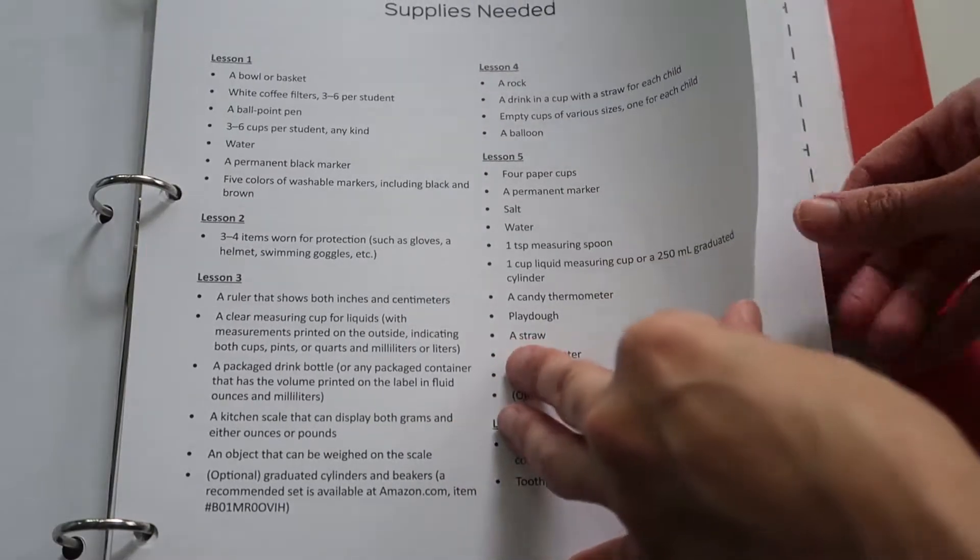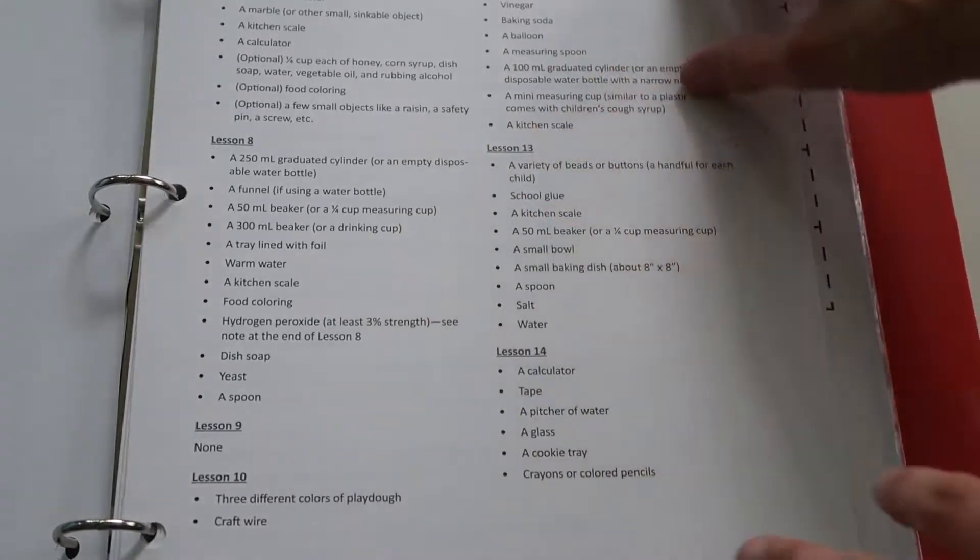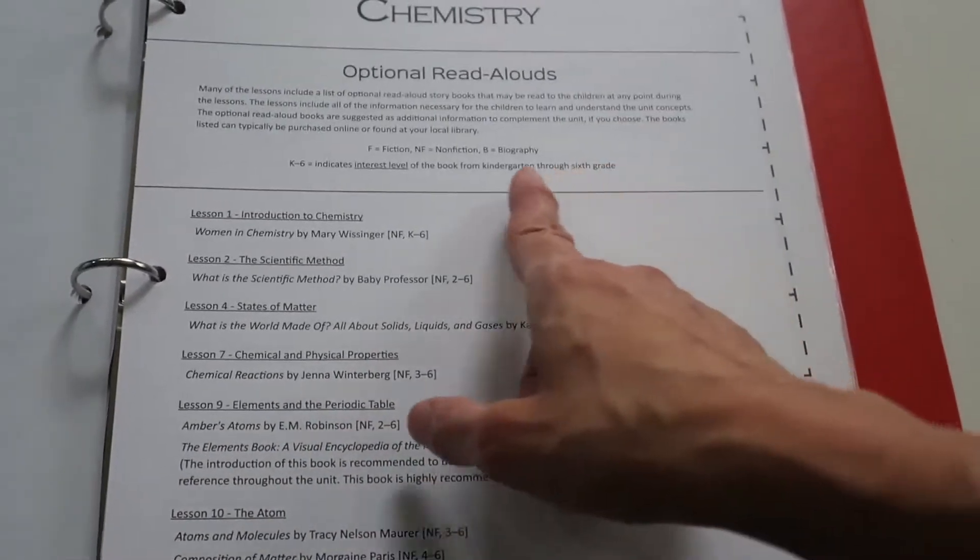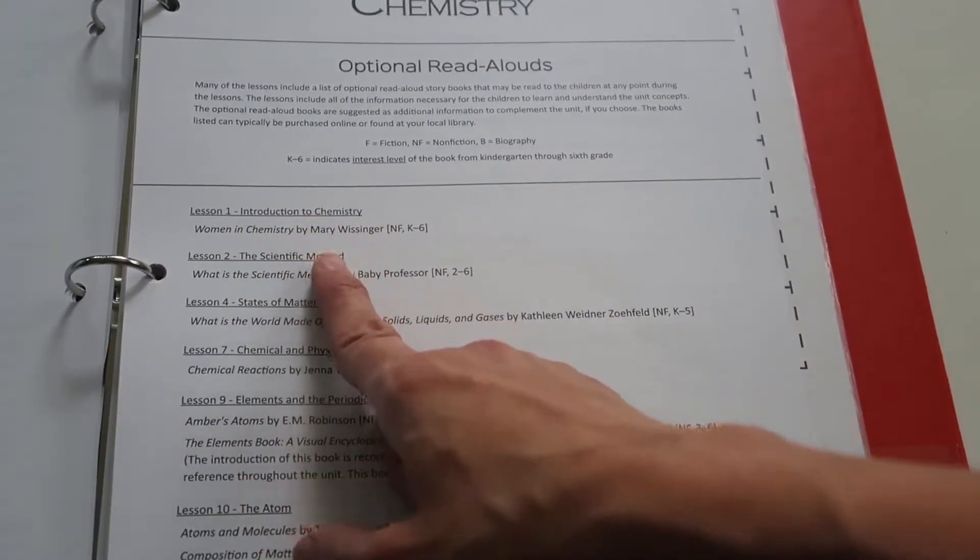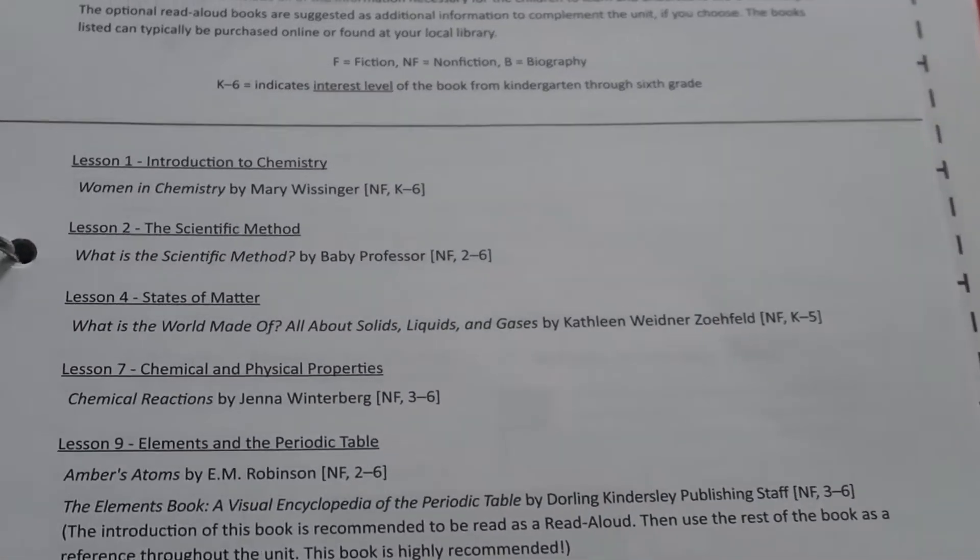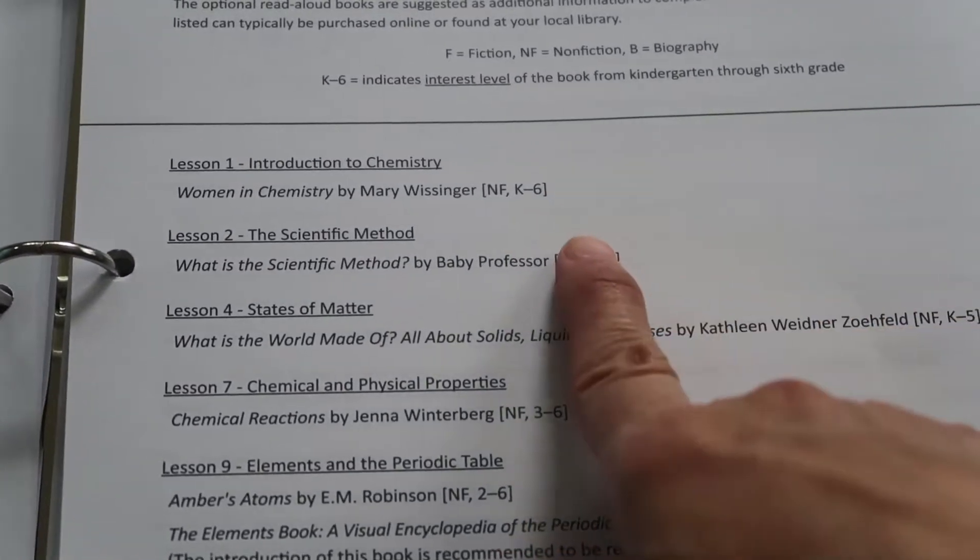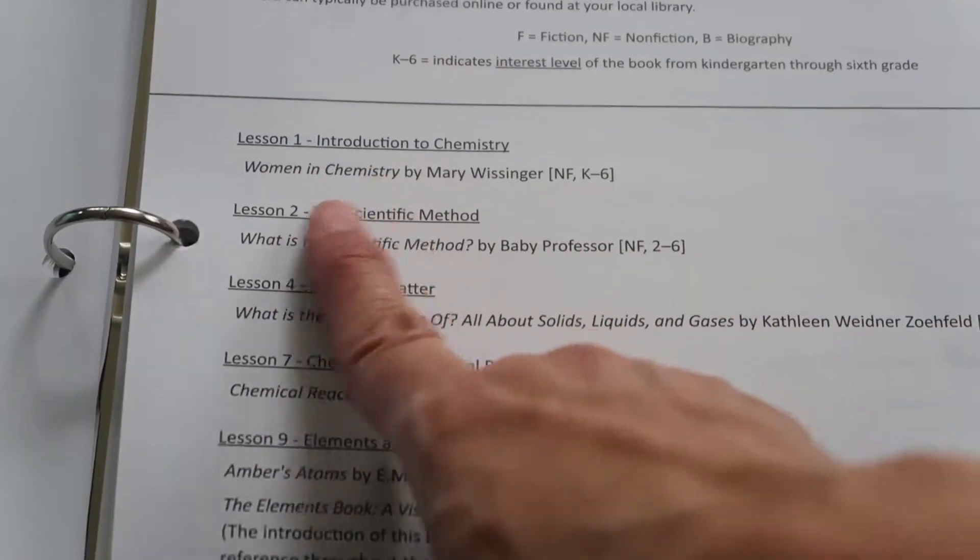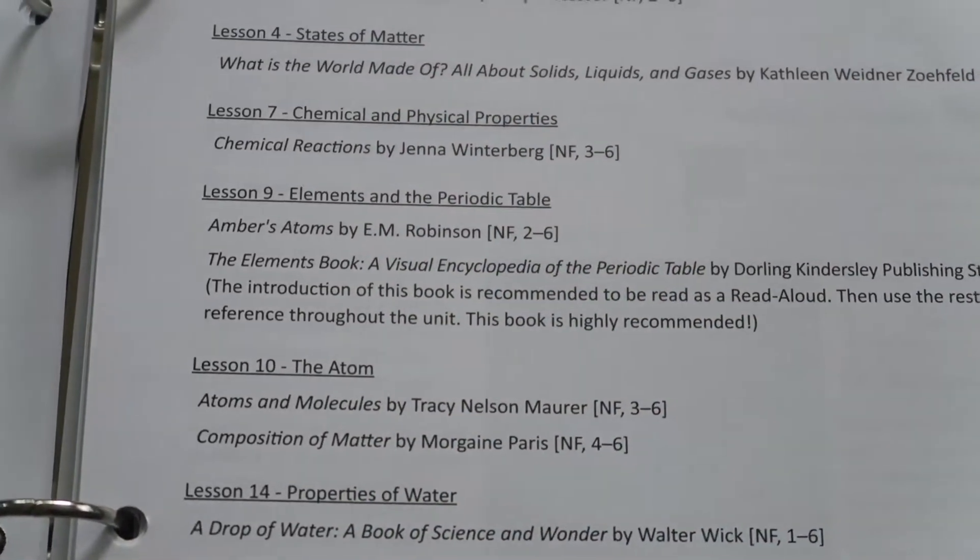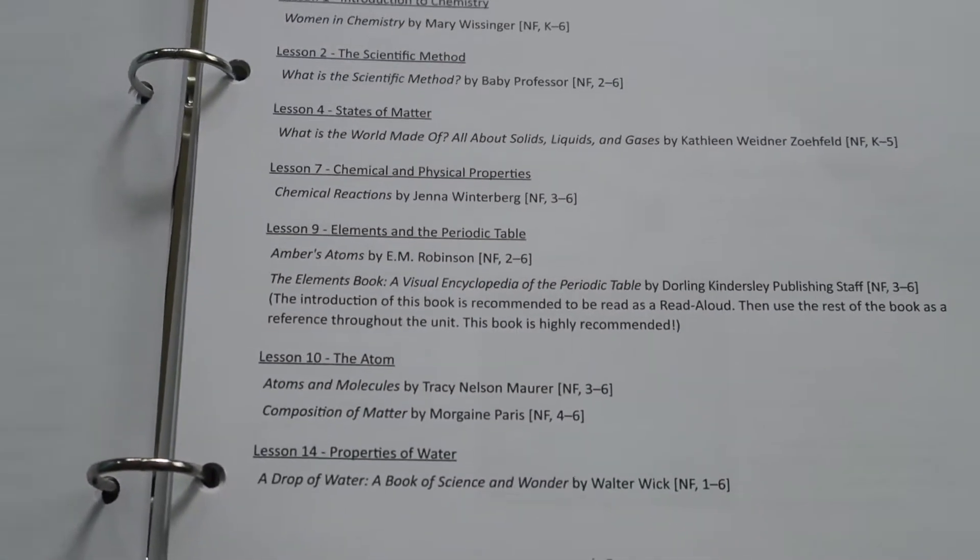Because this is a very hands-on science and there's lots of labs as you can see, especially in this unit. There's lots of hands-on activities. You also have optional read-alouds for each lesson. It tells you if the book is fiction or not fiction, if it's a biography, and it tells you what age range that it's for. So Women in Chemistry is a book, what is the scientific method, what is the world made of. So there's different books to go with each different lesson.